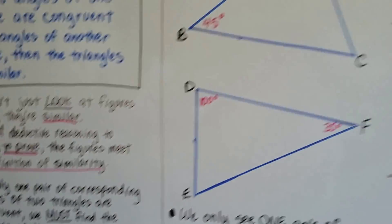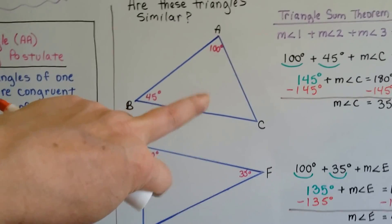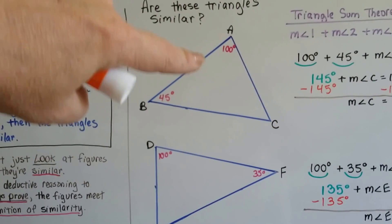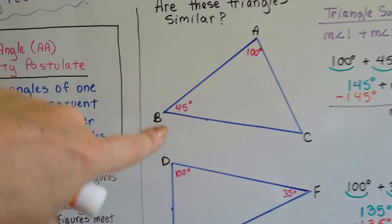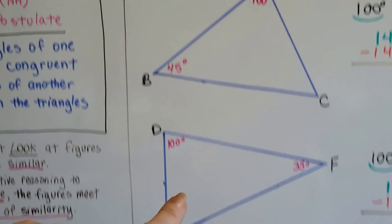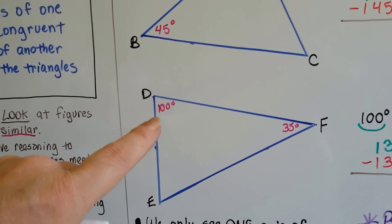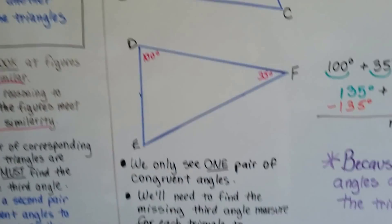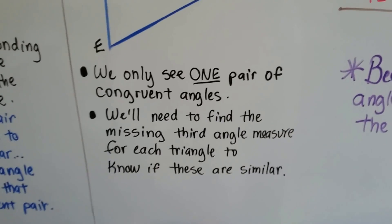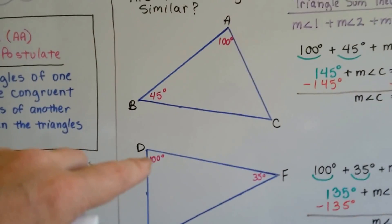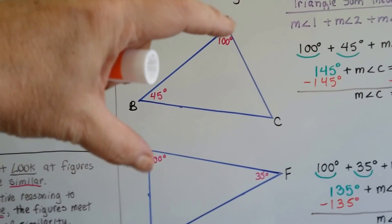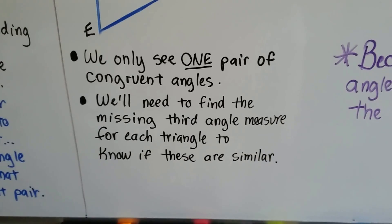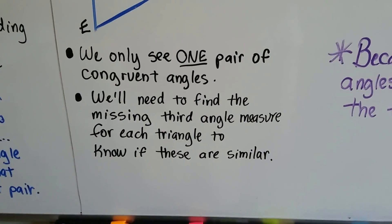So take a look at these two triangles right here. Triangle ABC has an angle of 100 degrees and an angle B of 45 degrees. Triangle DEF has a 100 degree angle and a 35 degree angle. Are they similar? We only see one pair of congruent angles, the 100 degrees and the 100 degrees. We need to find the missing third angle measure for each triangle to know if they're similar.